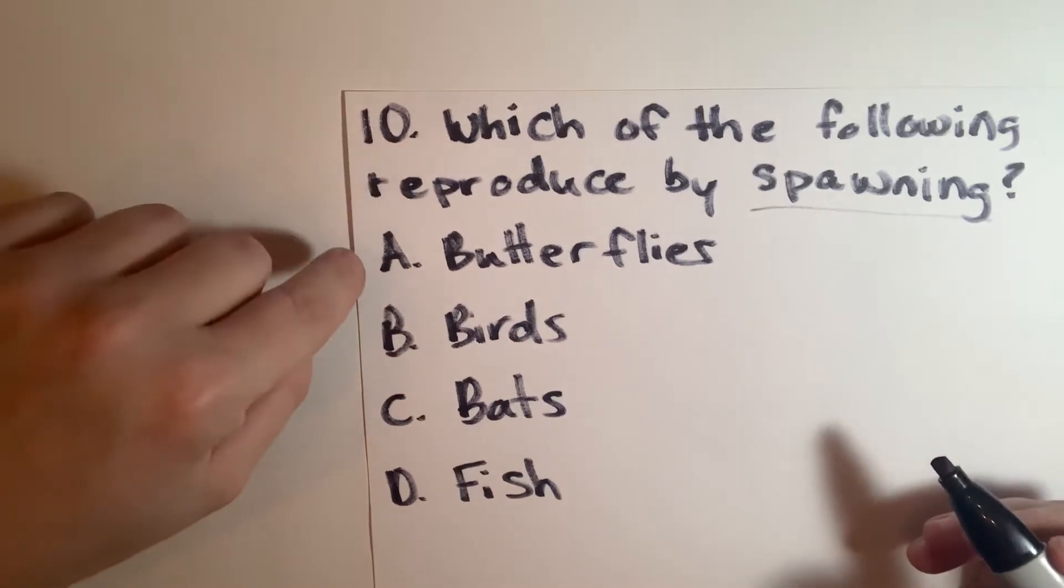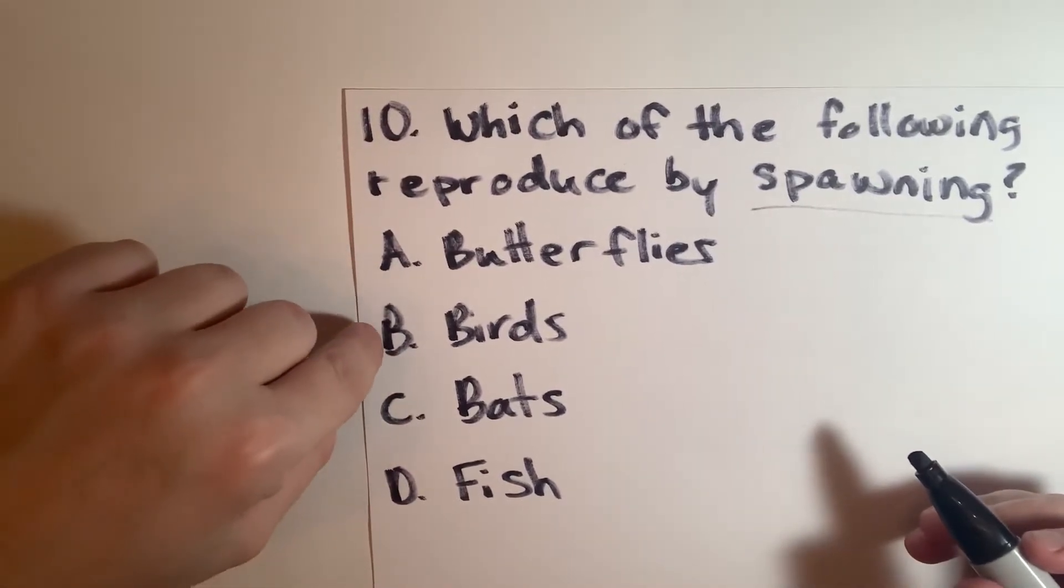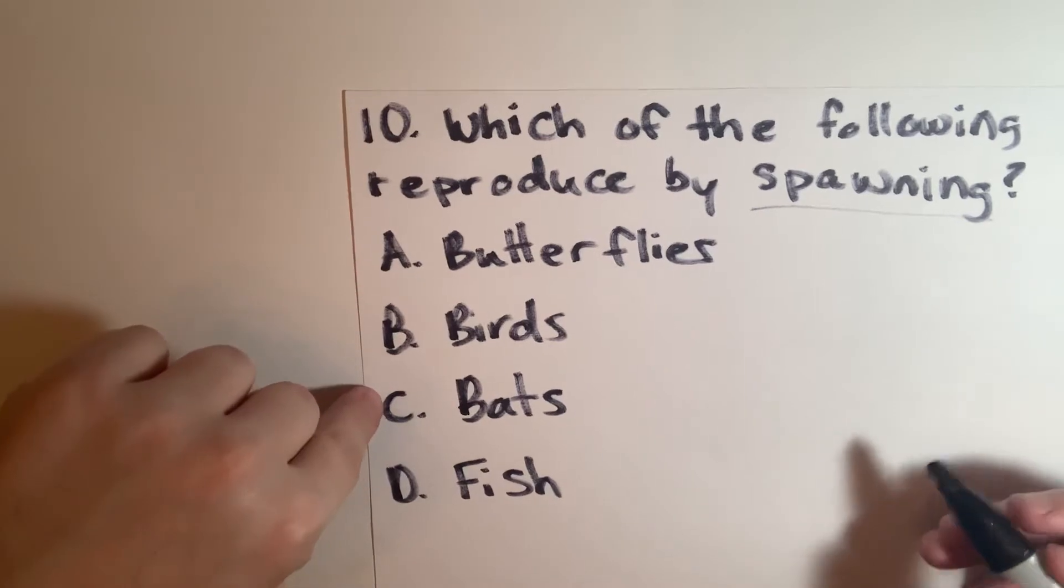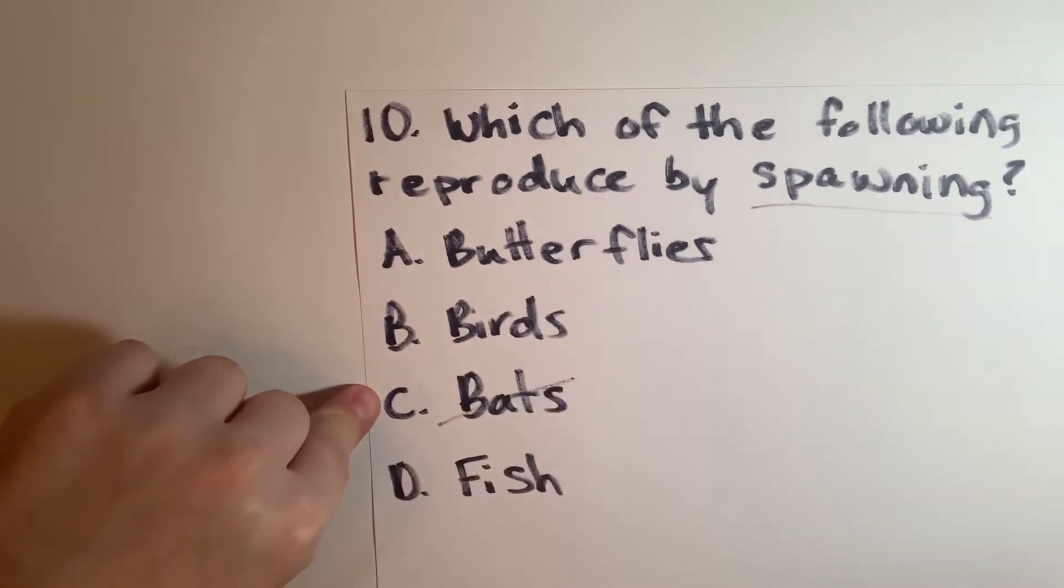So right away we can see butterflies have to do with eggs, birds have eggs, fish have eggs, bats are mammals. So we can cross that one off.